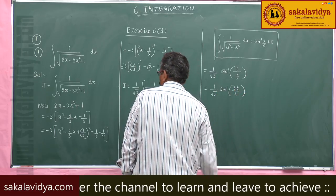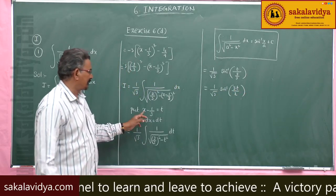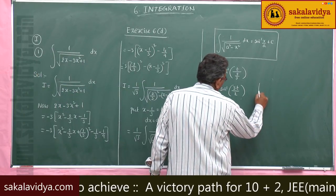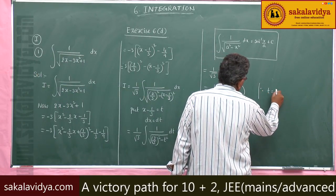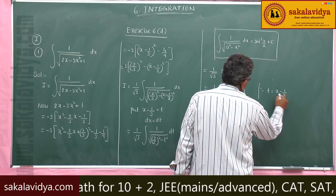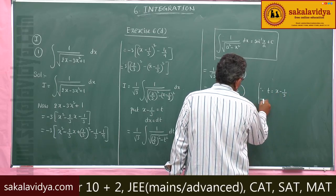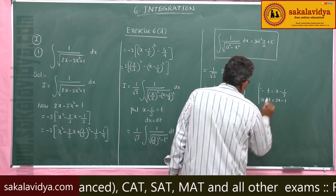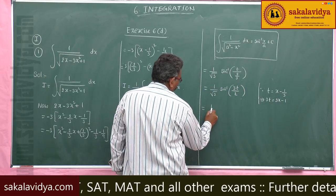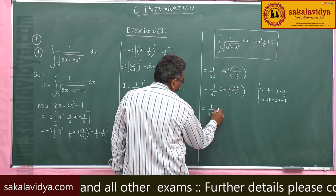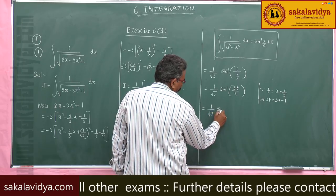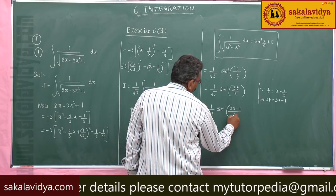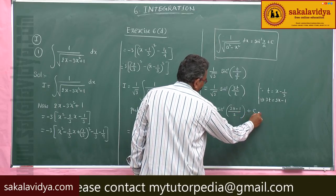What does t stand for? That is x minus 1/3. So here, t equals x minus 1/3, which means 3t equals 3x minus 1. Therefore, the answer is 1/root 3 times sin inverse of (3x minus 1) by 2, plus constant of integration.